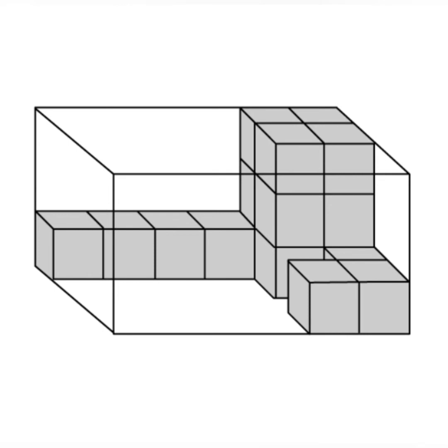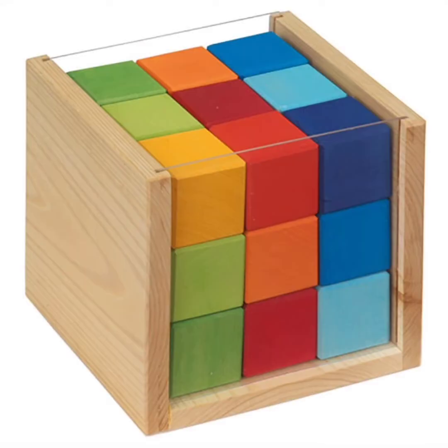A cube of side one unit occupies one cubic unit of volume or space. In this box you can see 27 cubes are filled in the box. So the volume of the box is 27 cubic units.